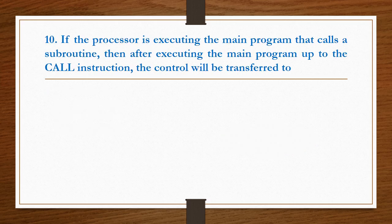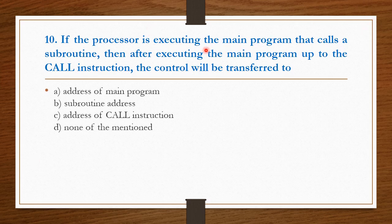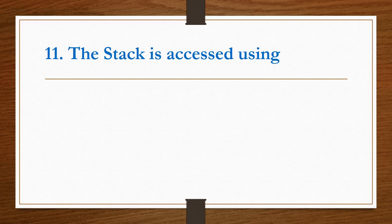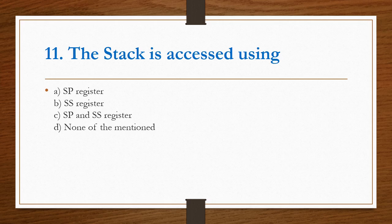Next question: if the processor is executing the main program that calls a subroutine, then after executing the main program up to the call instruction, the control will be transferred to subroutine address. The stack is accessed using SP register, SS register, or SP and SS register. Option C is the right answer. Stack can be accessed using SP and SS register.